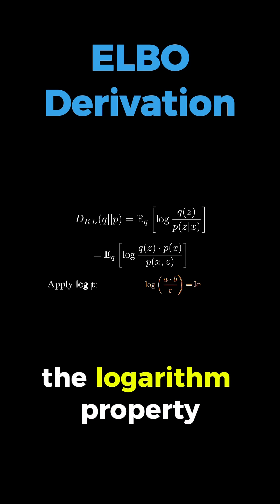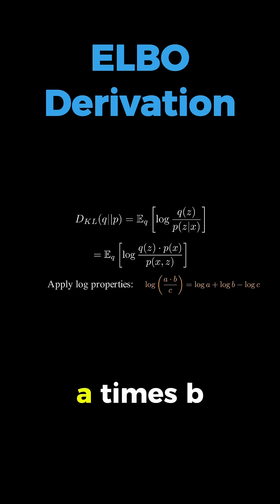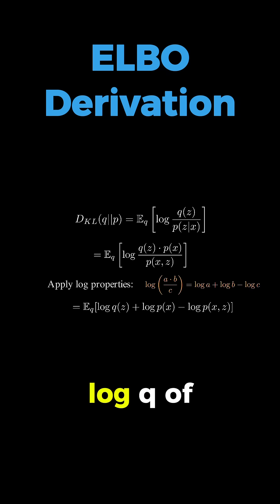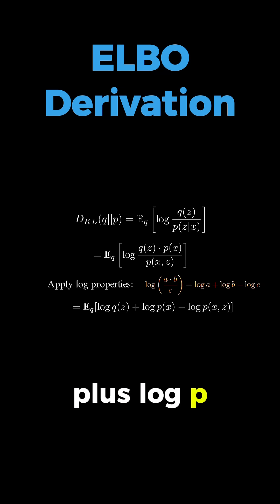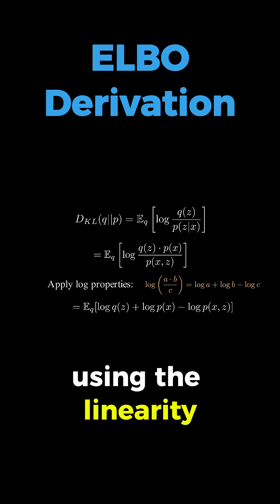Now we apply the logarithm property that log of A times B over C equals log A plus log B minus log C, which gives us the expectation of log Q of Z plus log P of X minus log P of X and Z.